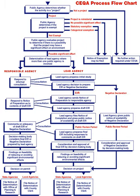Among all the alternatives, the EIR identifies the environmentally superior alternative. If the environmentally superior alternative is the no-project alternative, the EIR identifies the environmentally superior alternative among the other alternatives. The EIR process begins with the circulation of a Notice of Preparation which informs the public, responsible agencies, trustee agencies, and the OPR that an EIR will be prepared for a given project. The NOP must include sufficient project description details and likely environmental effects such that agencies and public citizens can provide meaningful comments on the proposed project for analysis in the EIR.